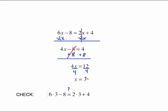The check is going to have us take 3 and put it in place of x on both sides. So we're really checking to see if both sides are equal to each other. 6 times 3 minus 8 on the left side. 2 times 3 plus 4 on the right side. 6 times 3 is 18. 18 minus 8 gives us 10 on the left side. 2 times 3 is 6. 6 plus 4 is 10 so we know we're correct.